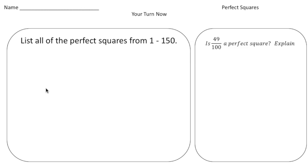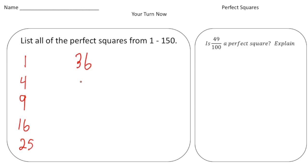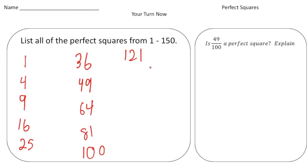Welcome back — let's look at these practice problems. For the first one, list all perfect squares from one to one hundred fifty. Starting with one (one times one), then four (two times two), nine (three times three), sixteen, twenty-five, thirty-six (six times six), forty-nine (seven times seven), sixty-four (eight times eight), eighty-one (nine times nine), one hundred (ten times ten), one hundred twenty-one (eleven times eleven), and finally one hundred forty-four (twelve times twelve).